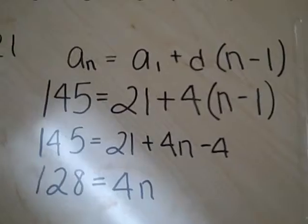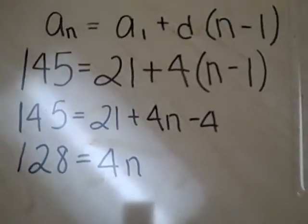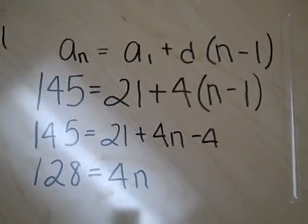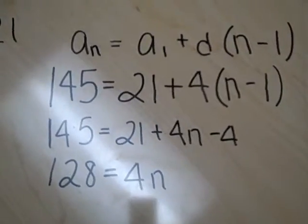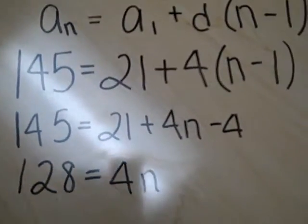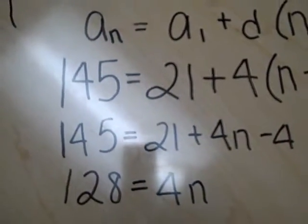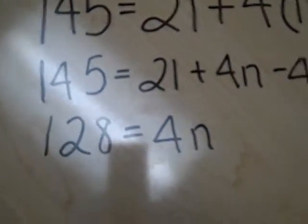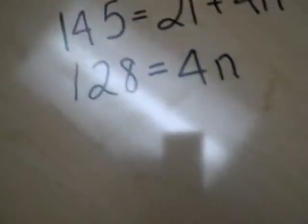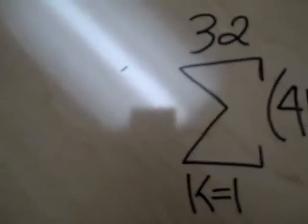In order to solve for the n value, we substituted 145 for aₙ. Then we set up the equation as 145 = 21 + 4(n - 1), which simplifies to 145 = 21 + 4n - 4. Then we simplified to 128 = 4n, and found that n = 32.